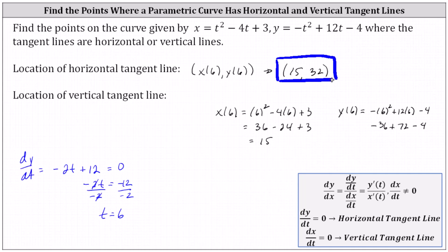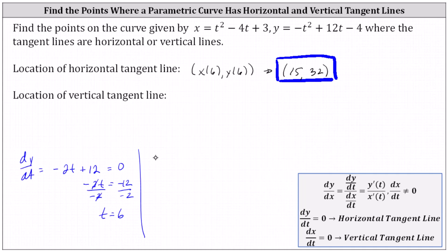Now let's determine the location of the vertical tangent line by setting dx/dt equal to zero. dx/dt equals the derivative of t squared minus 4t plus 3, which is 2t minus 4. We set this equal to zero and solve — add 4 to both sides and then divide by 2 — and we get t equals 2.